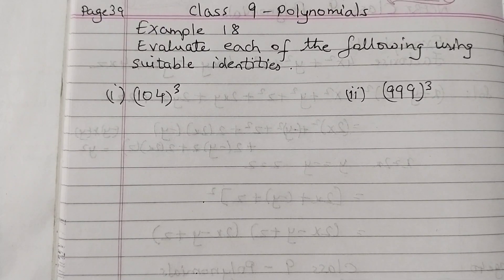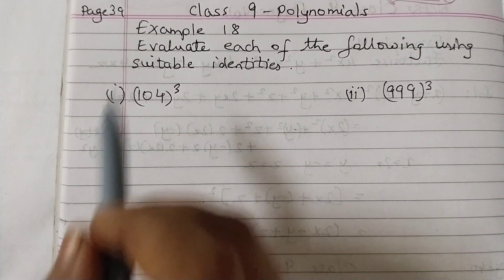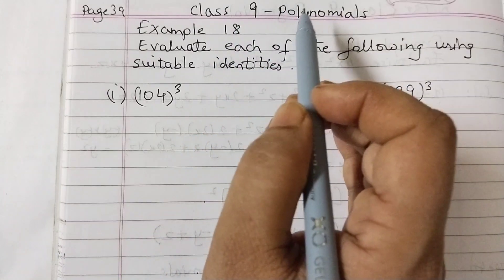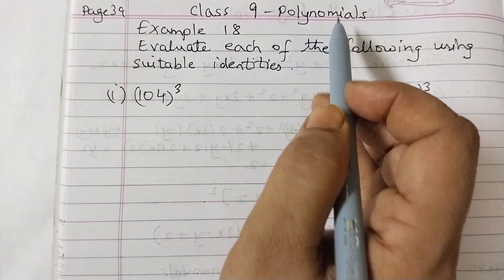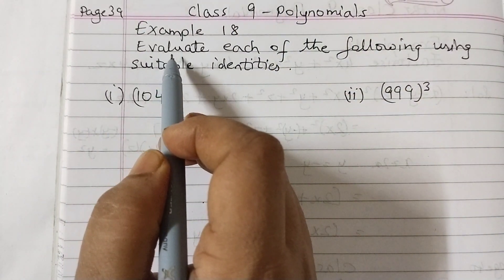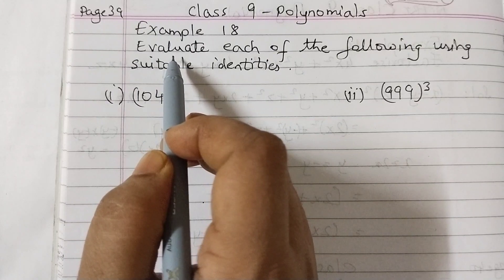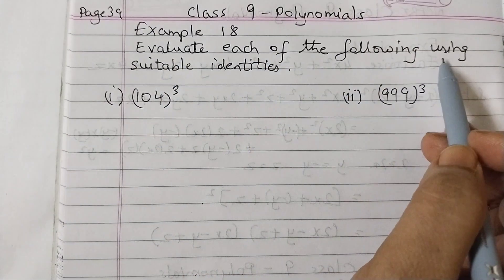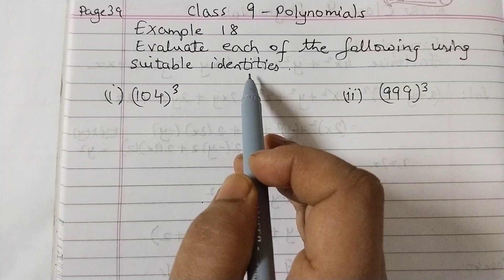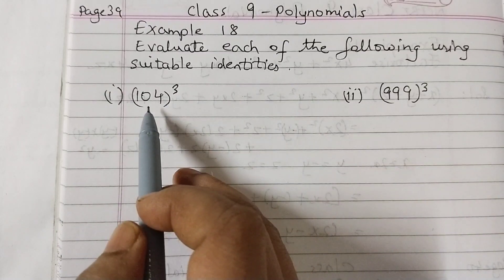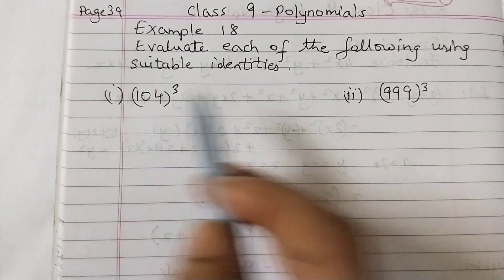Hello students, in today's video we shall discuss example number 18 of chapter 2 polynomials. Evaluate, that means to find out the value of each of the following using suitable identities. We need to find the value of 104 cubed and 999 cubed using identities.